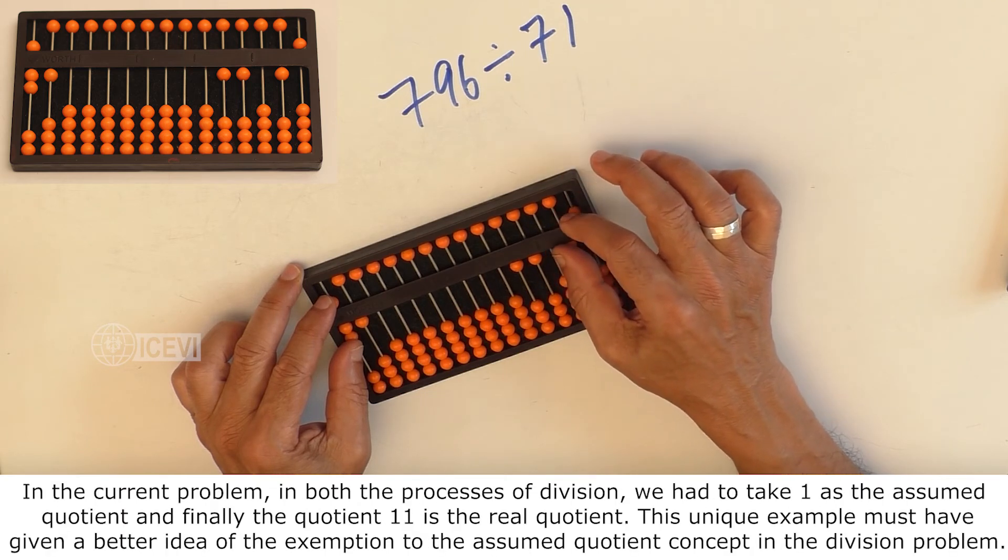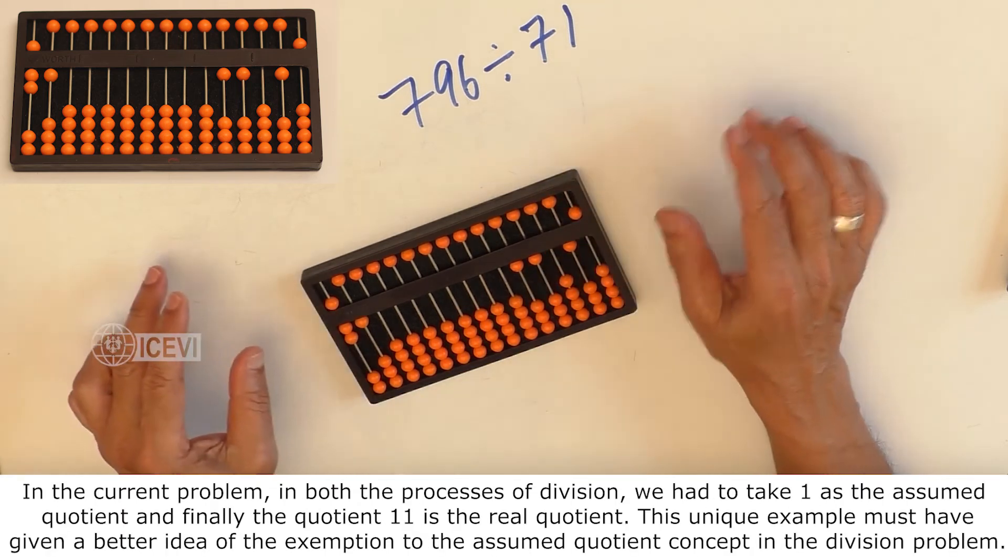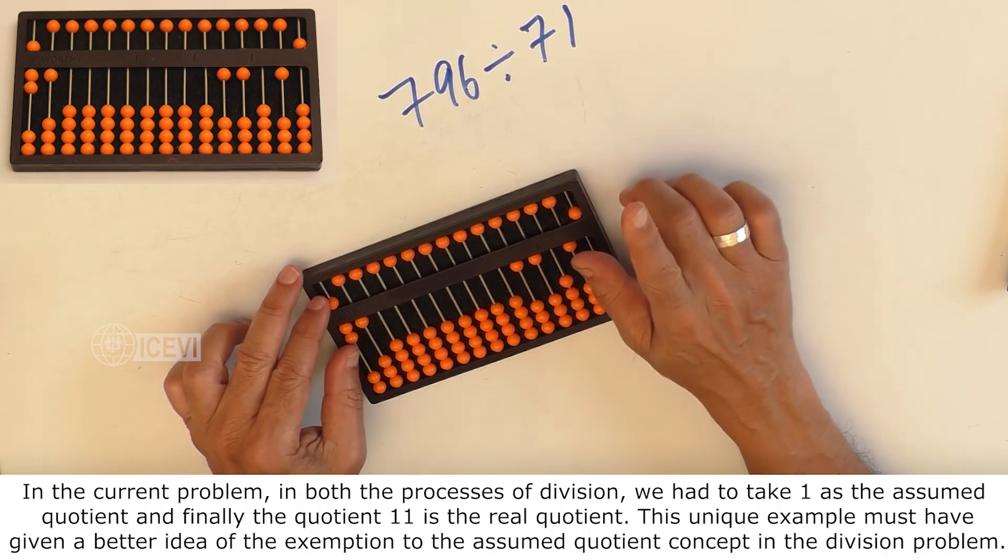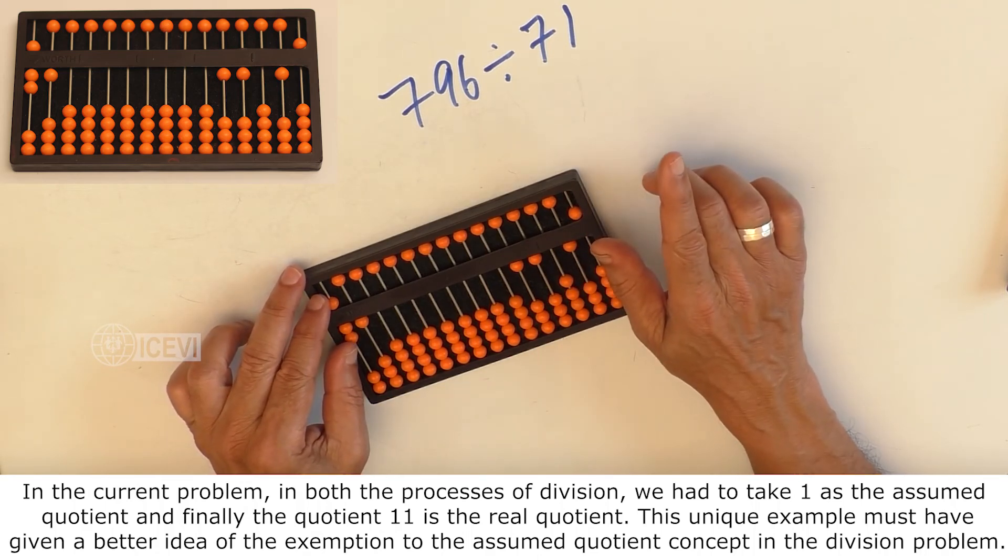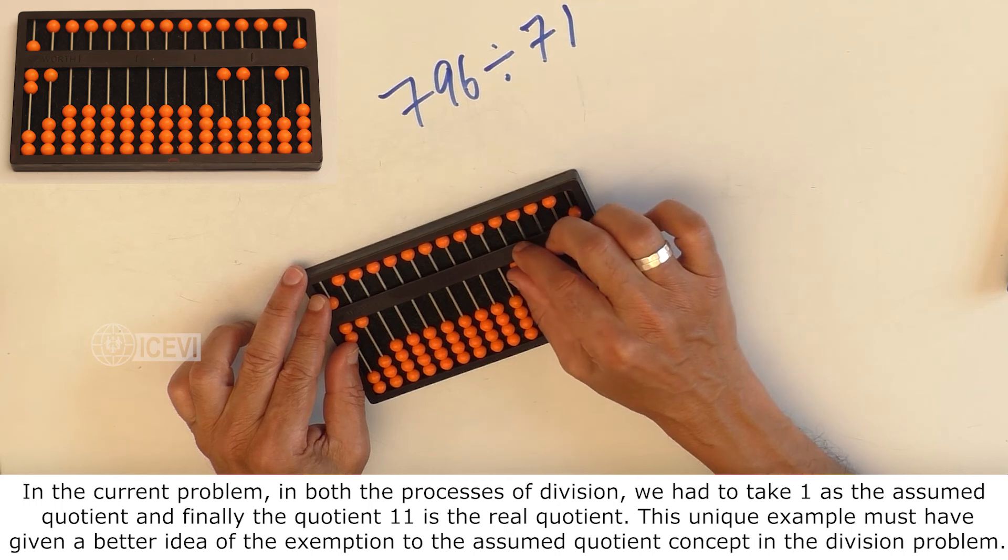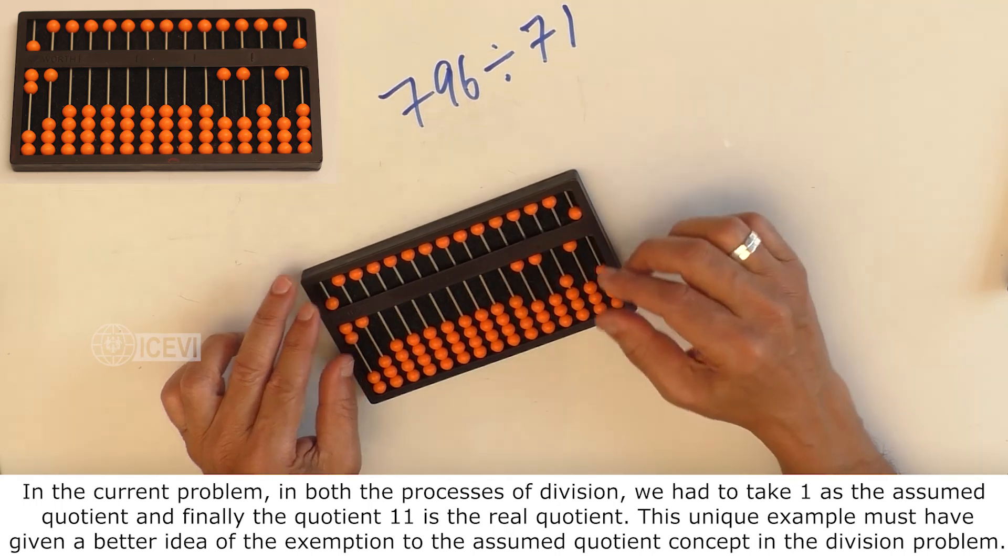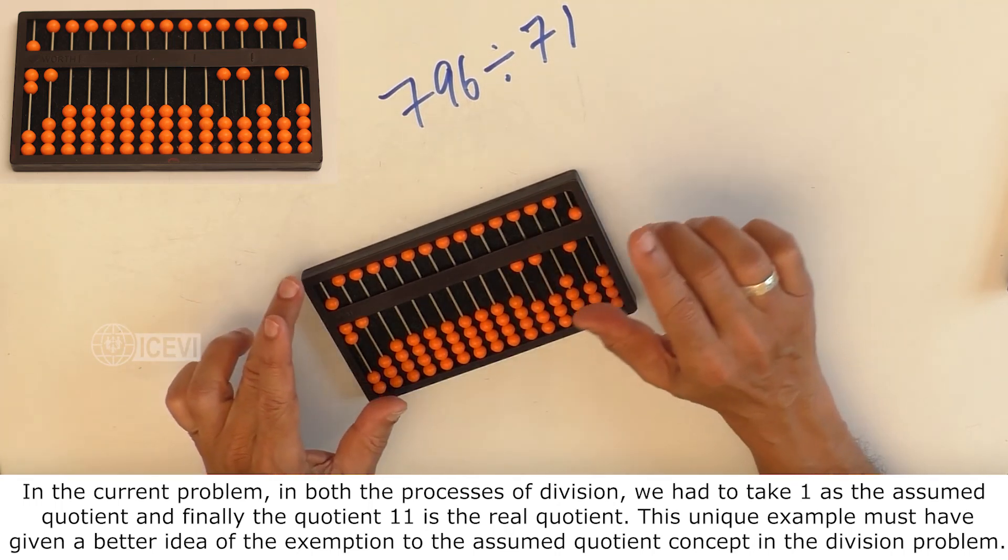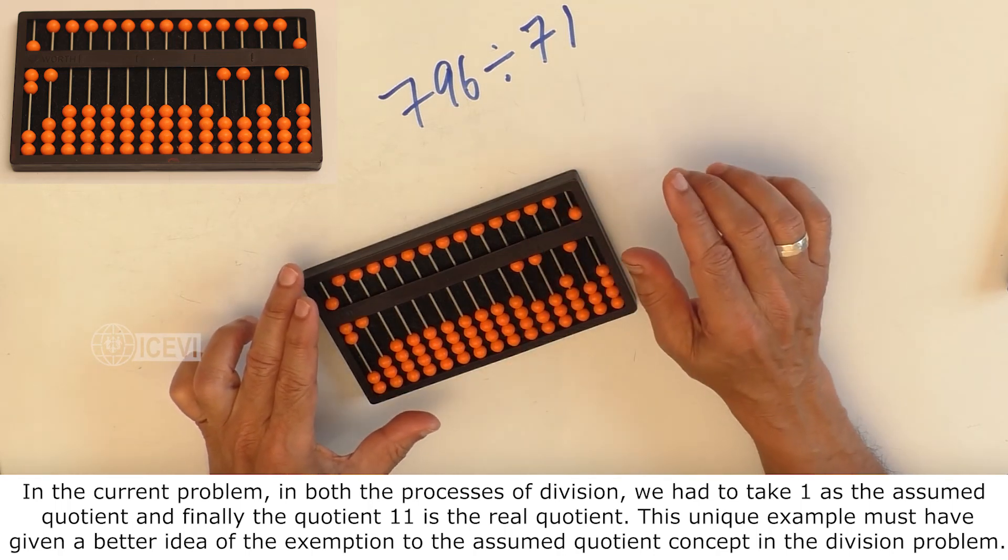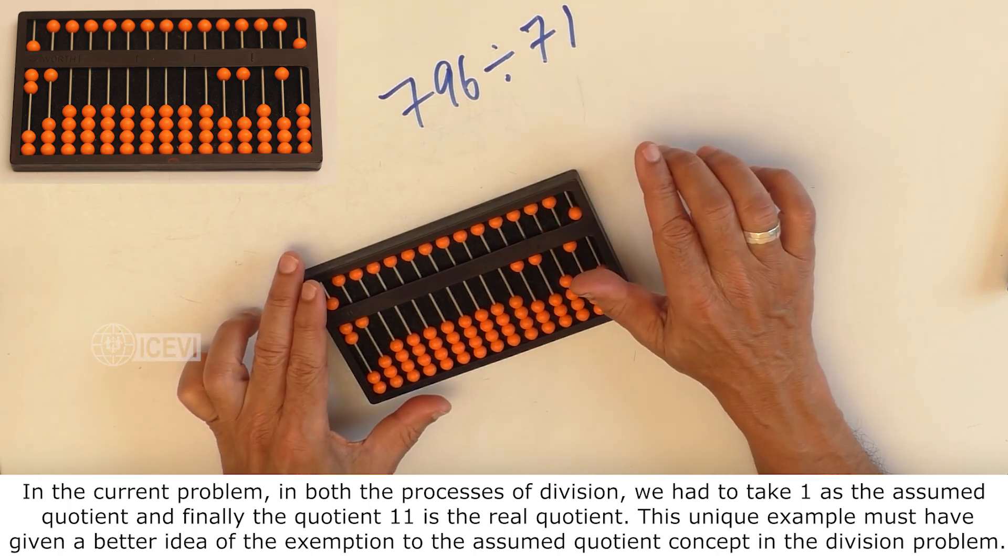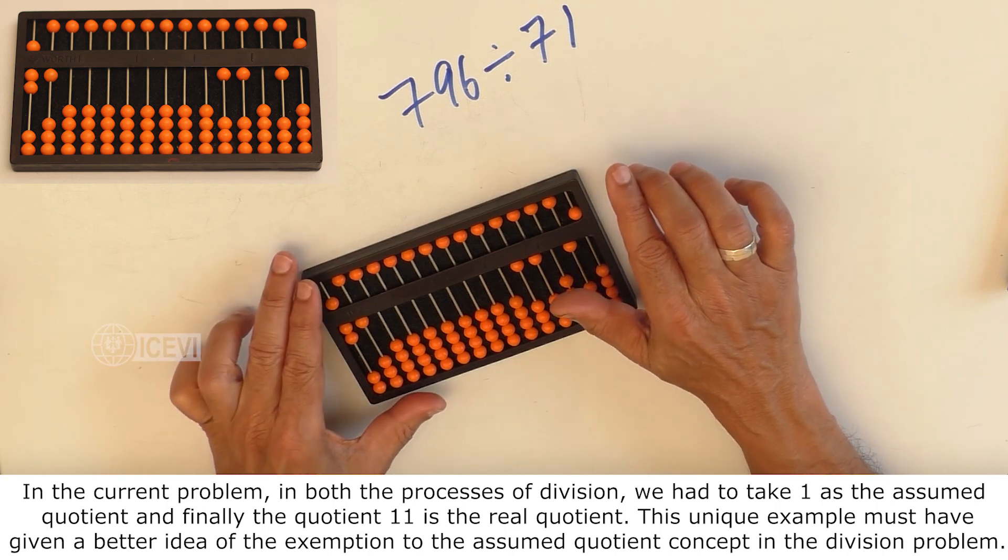In the current problem, in both the processes of division, we had to take 1 as the assumed quotient and finally, the quotient 11 is the real quotient. This unique example must have given a better idea of the exemption to the assumed quotient concept in the division problem.